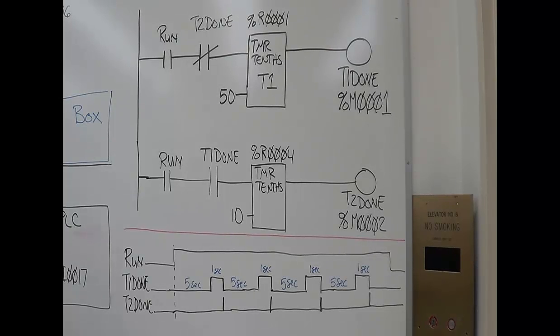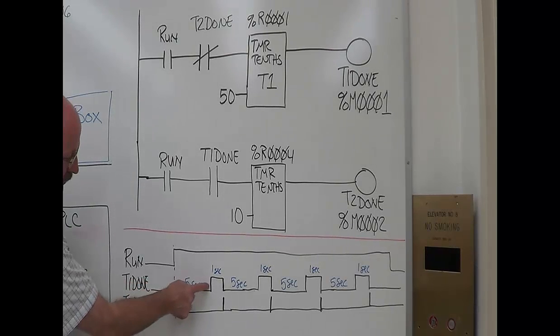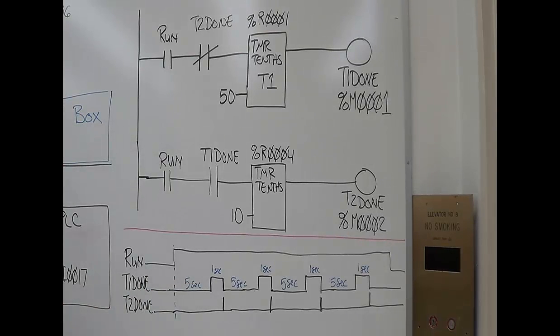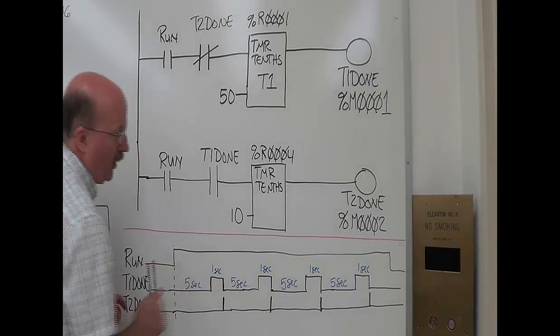If you look at the timing diagram, you'll see that the output on timer 1 done is off for 5 seconds. Then it will be on for 1 second, off for 5, on for 1.